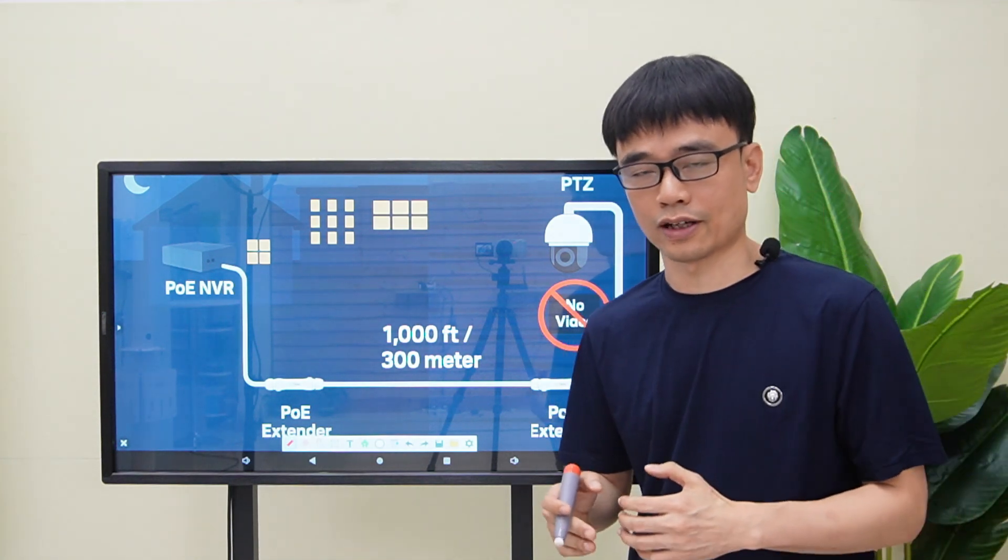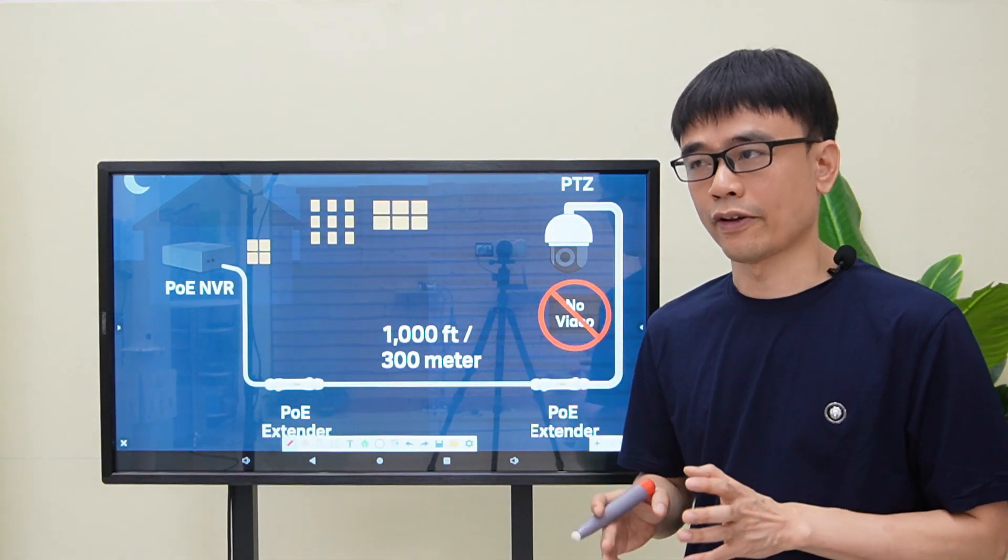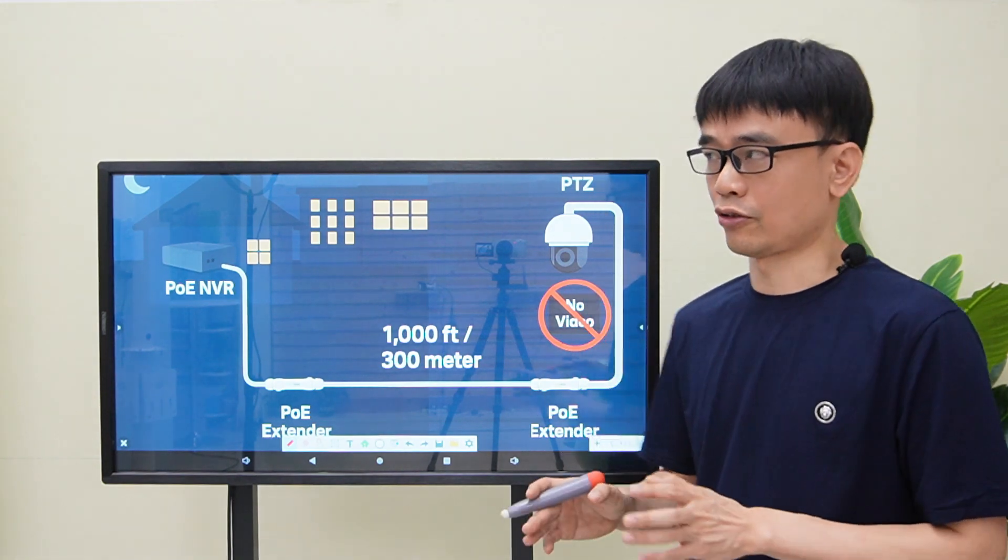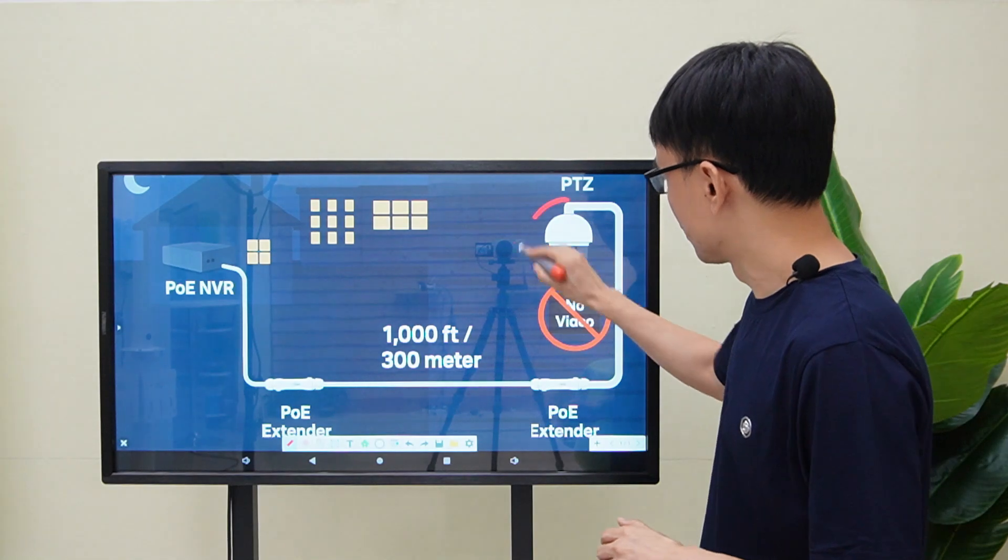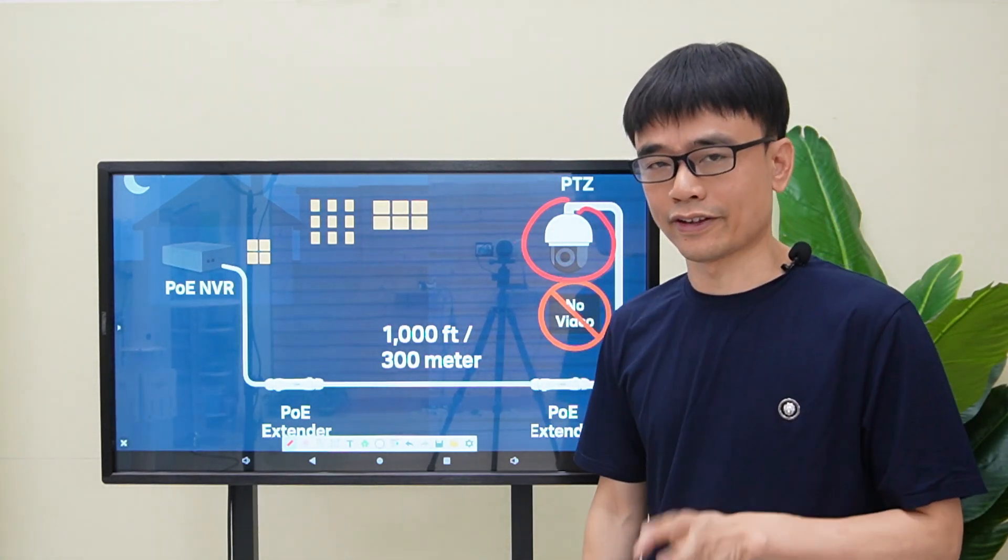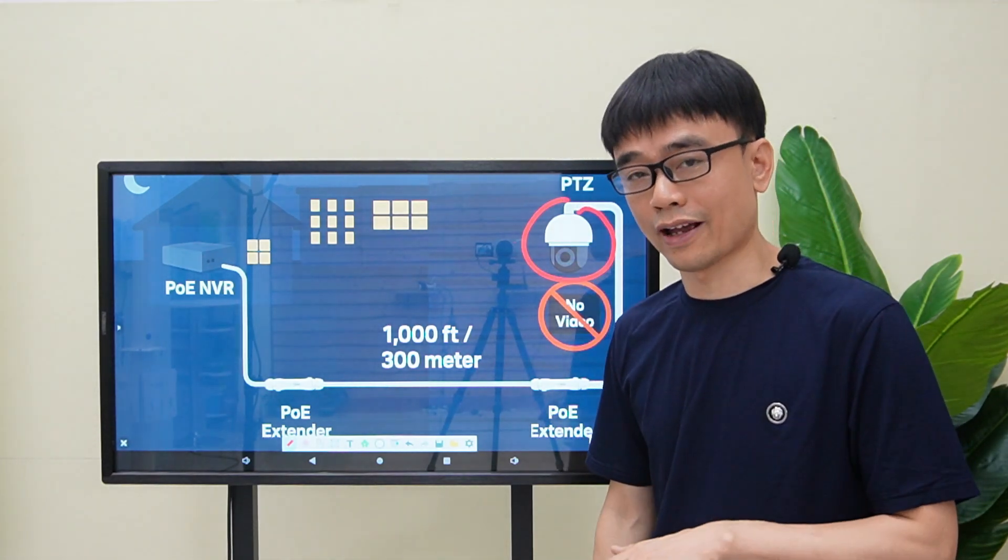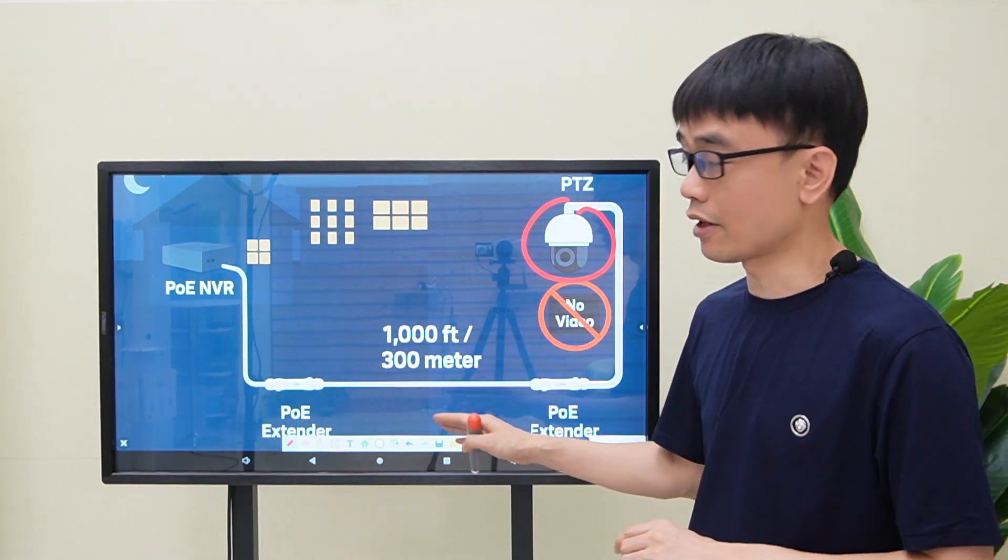We received a strange case from the customer. He said one of his PTZ cameras just lost the video at night. It is working great during the day, but it becomes offline at night.